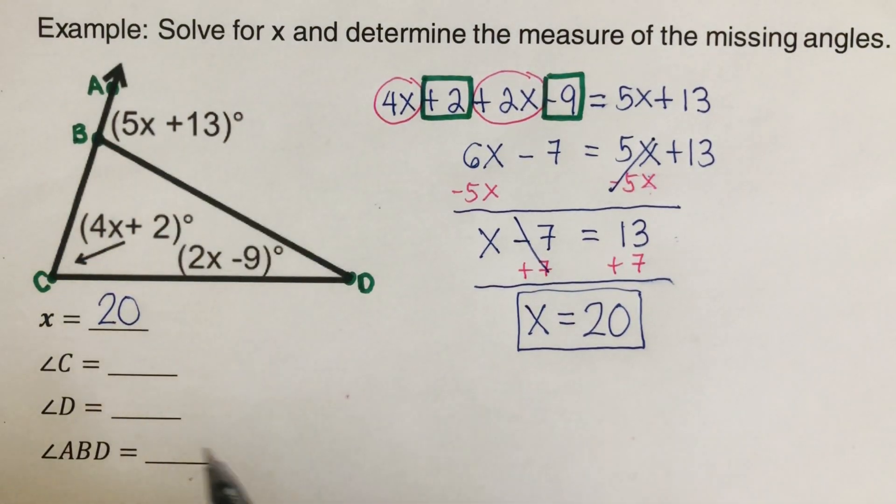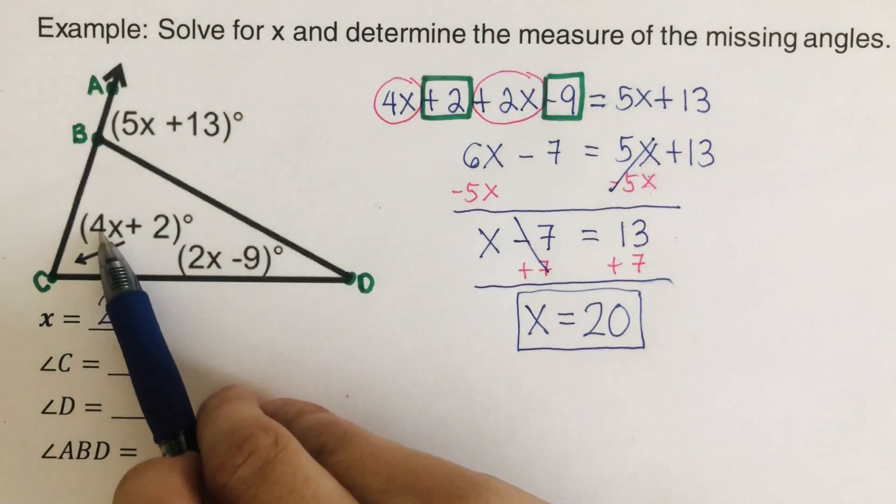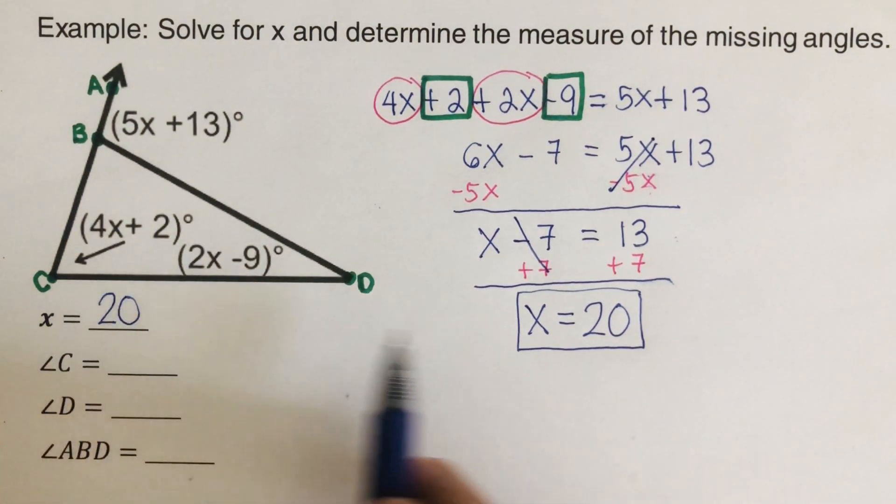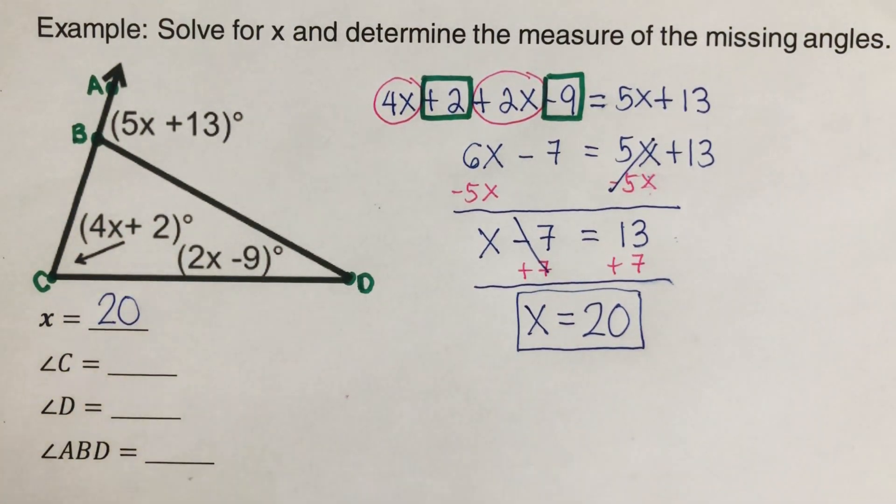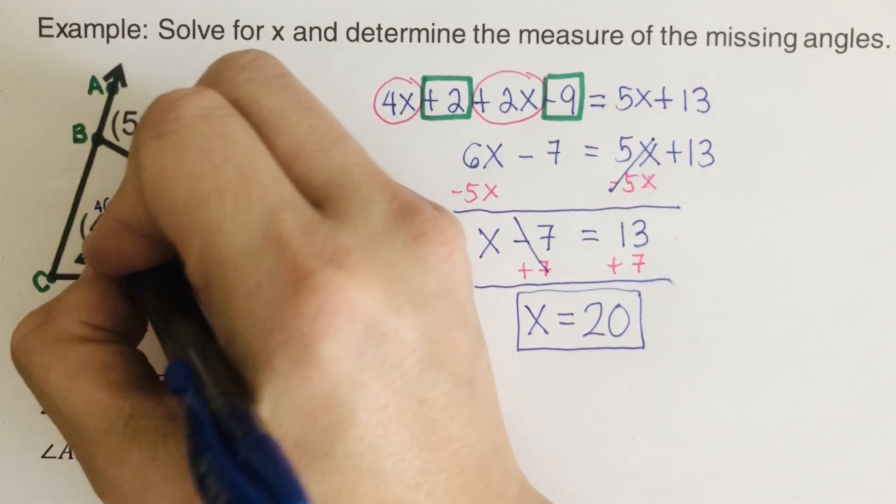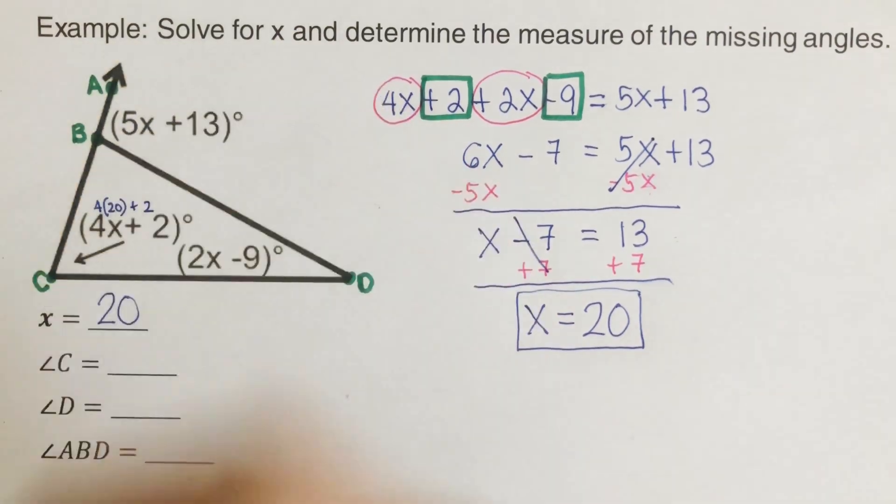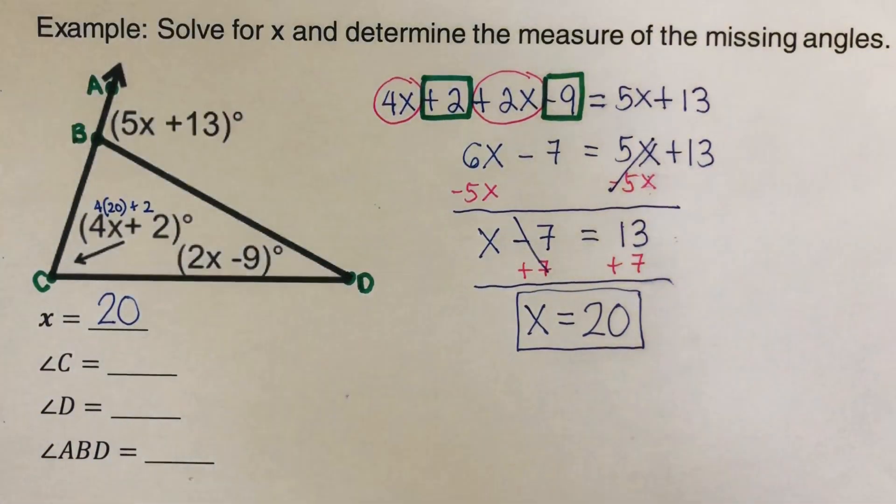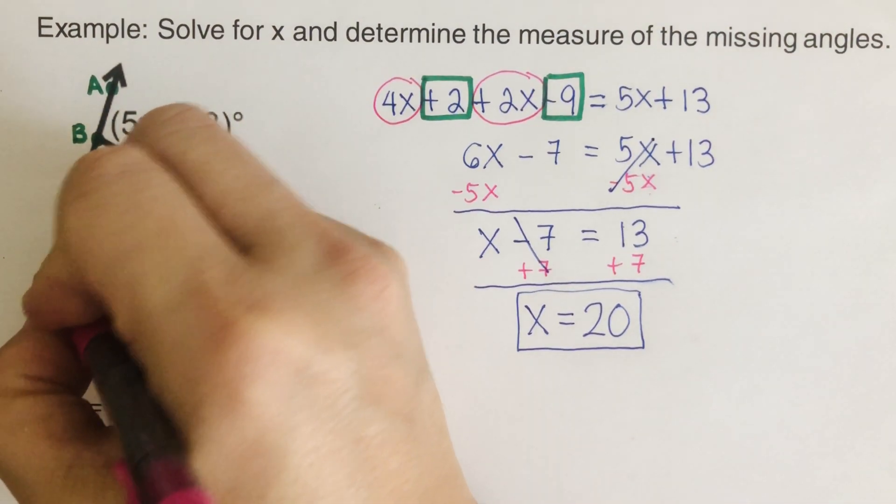Now we are supposed to find angle C. So what we're going to do is we plug the values into the expression, which we say that it is 20. So I go ahead and write 4 times 20 plus 2. So 4 times 20 is 80. 80 plus 2 is 82. So this is 82 degrees.